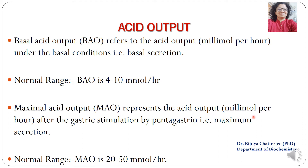Maximal acid output represents the acid output after stimulation. A stimulant is given to the patient, which may be an artificial stimulant like pentagastrin or caffeine, or some meal. Any one of these is given and then the acid output is checked. The reference range of maximal acid output is 20 to 50 millimoles per hour.